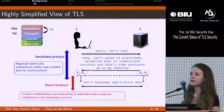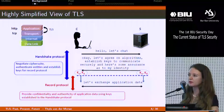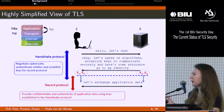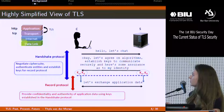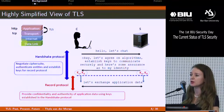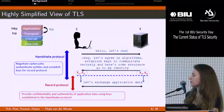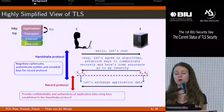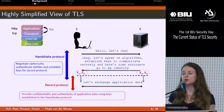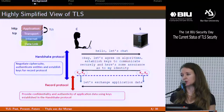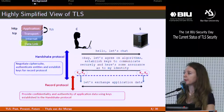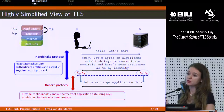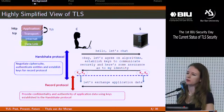TLS is largely made up of two sub-protocols: the handshake protocol and the record protocol. The handshake protocol uses public key cryptography to authenticate the communicating entities and to help establish keys that will be used to protect application data as part of the record protocol. The record protocol then makes use of these keys to provide confidentiality and authenticity of application data. In TLS 1.2 and below, the first record protected by the record protocol is the final message of the handshake — the finished message.